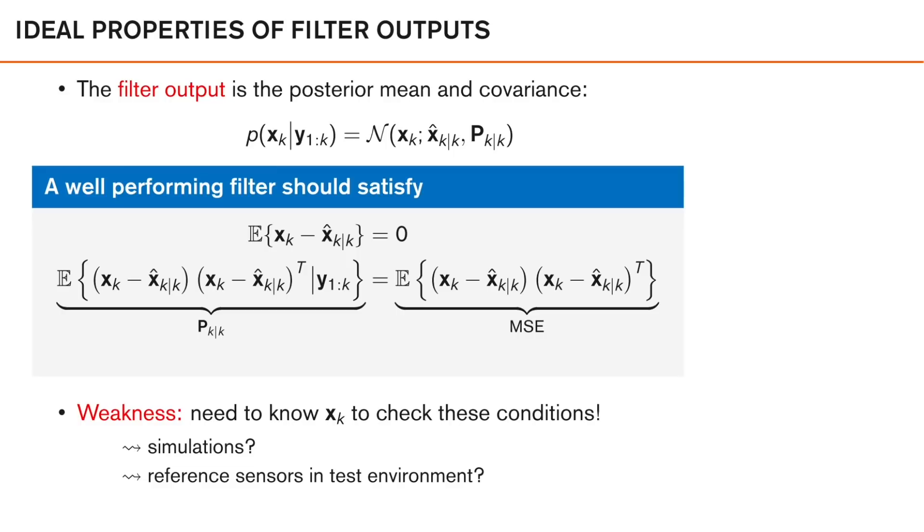To be able to answer these questions, I think it's good to know how we expect the filter to behave in an ideal case. That is, when everything is working as it should, and we have selected and tuned our models to the system. Although this assumes that the models that we have chosen actually model the underlying system, which we know it does not, still, it's often reasonable to come very close to the ideal performance, especially in this course where the true models are given. So we know in the ideal case that the Kalman filter calculates the true posterior by calculating the posterior mean and covariance of this Gaussian density. And there are two interesting properties that well-performing filters should have as a result of this.